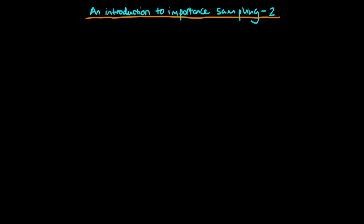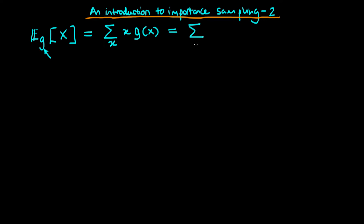In this video I want to continue our introduction to importance sampling. To recap from last time, if we want to work out the expected value of some random variable x assuming a given probability distribution g, and x is a discrete random variable, it's just the sum over all possible values of x of x times g of x. We can use a trick to rewrite this as the sum over x of x times g(x) over f(x) times f(x), where the f(x)'s cancel, and f is some other distribution we can sample from. This is just the expected value of that expression but in terms of the new distribution f.